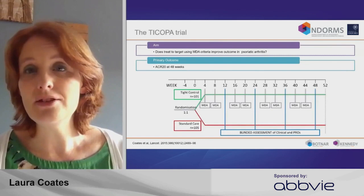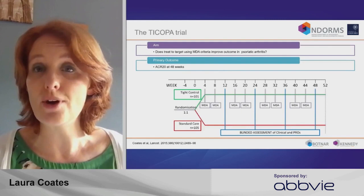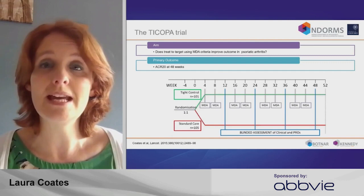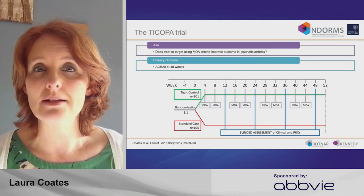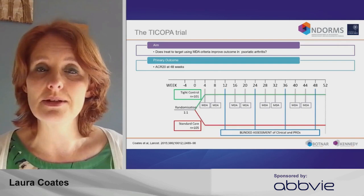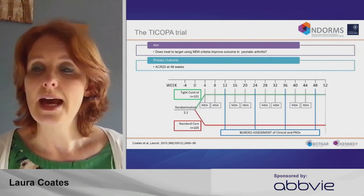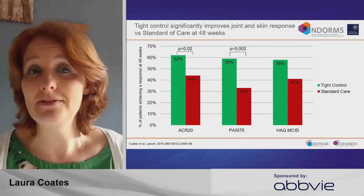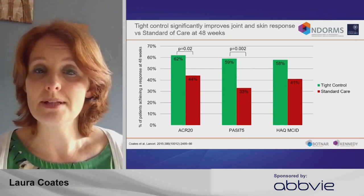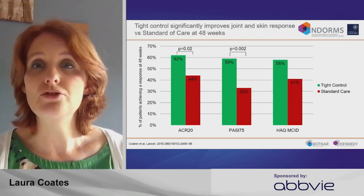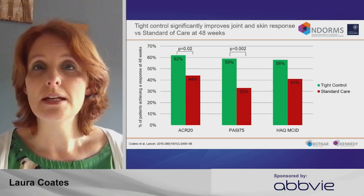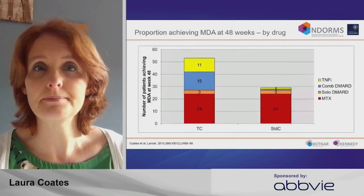But that doesn't tell us whether an intervention can make a difference — it just tells us that those whose disease is under control have better outcomes. Can we actually intervene? Can we get patients with active, more severe disease into a state of good control? That's what we looked at in the TICOPA trial, which examined treat-to-target in patients newly diagnosed with psoriatic arthritis. Those in the tight control arm were seen every four weeks, aiming for minimal disease activity. The study showed clear benefit for arthritis outcomes like ACR20, psoriasis outcomes like PASI, and function outcomes like the HAQ — showing that tight control demonstrates superiority over standard care.